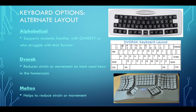With the Dvorak layout, a user does not need to purchase a separate keyboard. Standard keyboards can be converted to Dvorak by changing the settings within the keyboard's operating system and printing a diagram or relabeling keys. A Maltron layout keyboard represents another alternative, which you can see on the bottom right. The Maltron layout is based on frequency of letter use and places the most used letters and functions where the fingers and thumb may easily and comfortably reach them — A-N-I-S-F-D-T-H-O-R. Some benefits: alphabetical supports students familiar with QWERTY or who struggle with that format; Dvorak and Maltron both help reduce strain or movement.